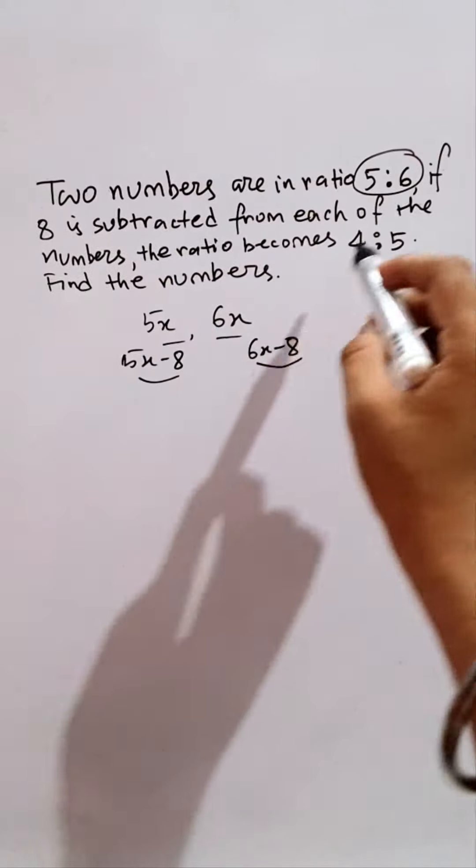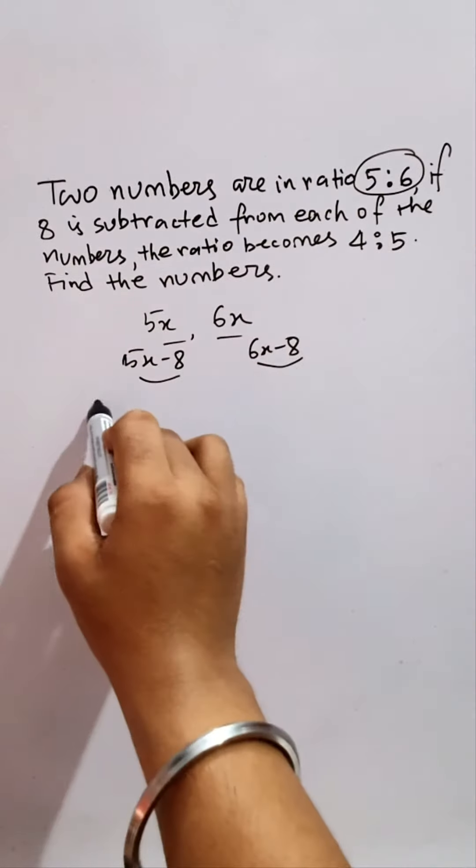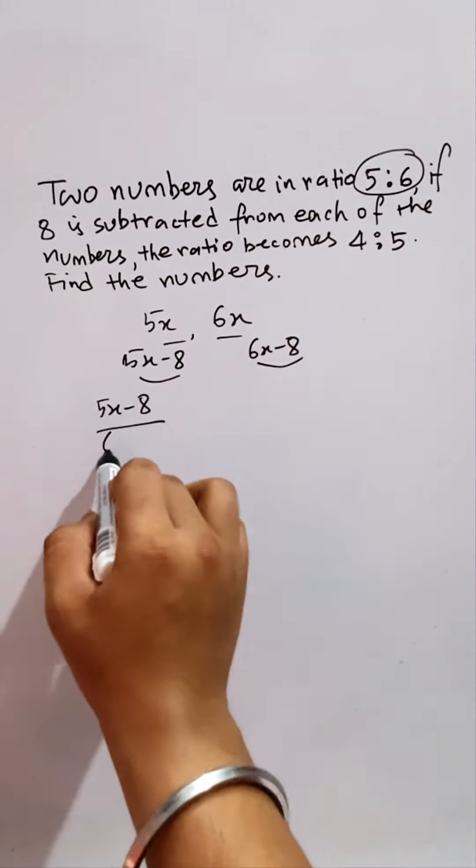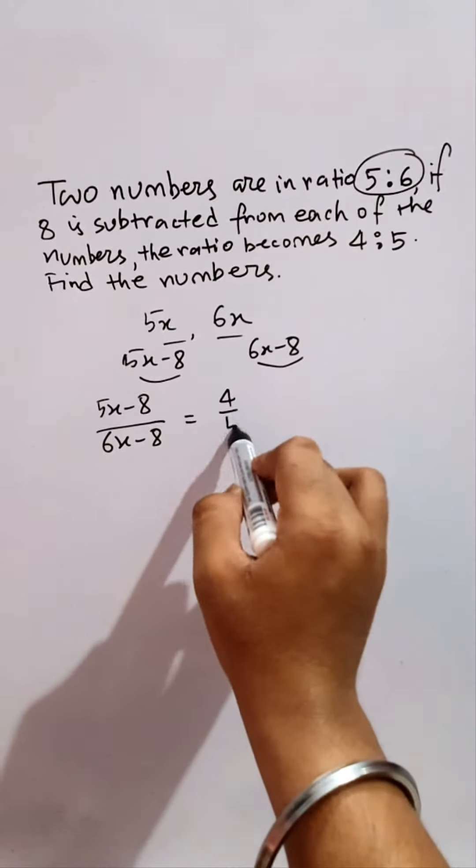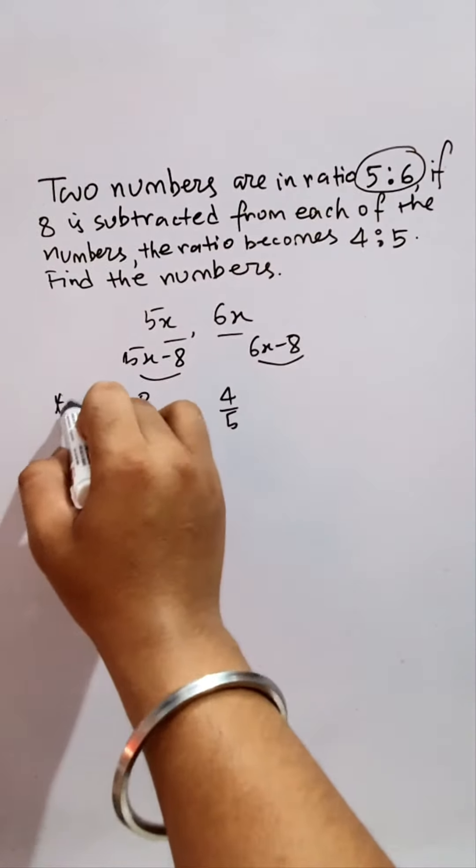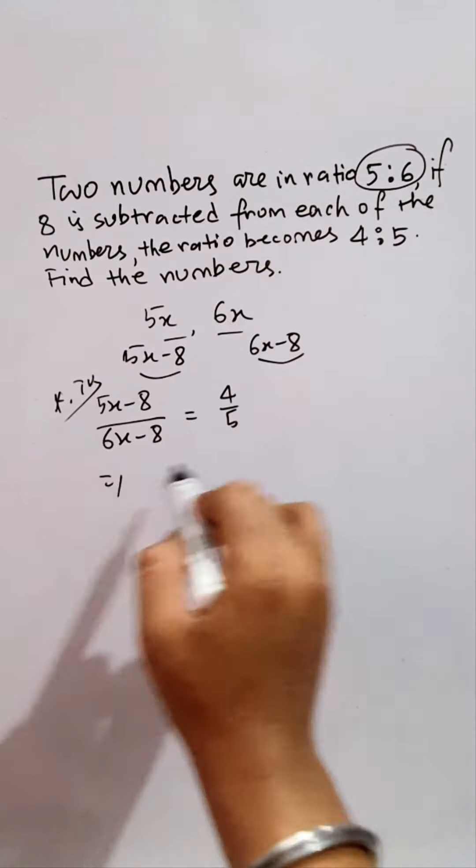The ratio becomes 4 is to 5, so 5x minus 8 divided by 6x minus 8, the ratio became 4 is to 5, that is 4 by 5. This is our ATQ. Now cross multiply them, it is 25x minus 40 equals 24x minus 32.